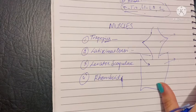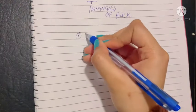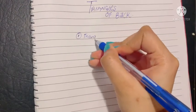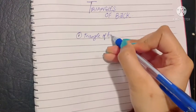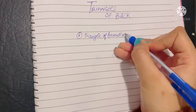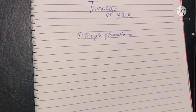Let's talk about the two triangles of these muscles. There are two types of triangles we are going to talk about today. The first triangle is the triangle of auscultation. Why is it known as the triangle of auscultation? Let's go into the depth of this.